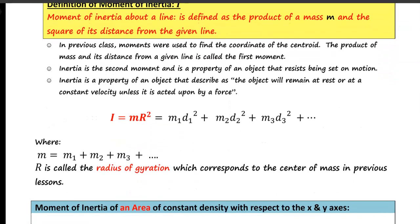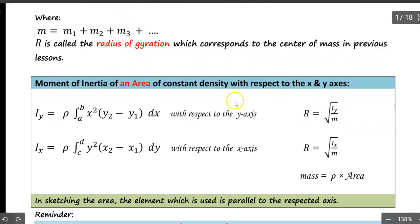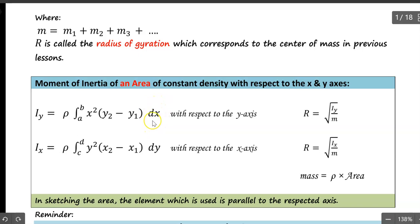In terms of calculus, we need to find the moment of inertia of an area with constant density with respect to the x and y axes. The formula for the moment of inertia with respect to the y-axis, Iy, equals rho multiplied by the integral evaluated from the lower limit to the upper limit. With respect to the y-axis, we use dx — the vertical element — and the upper and lower limits are a and b.